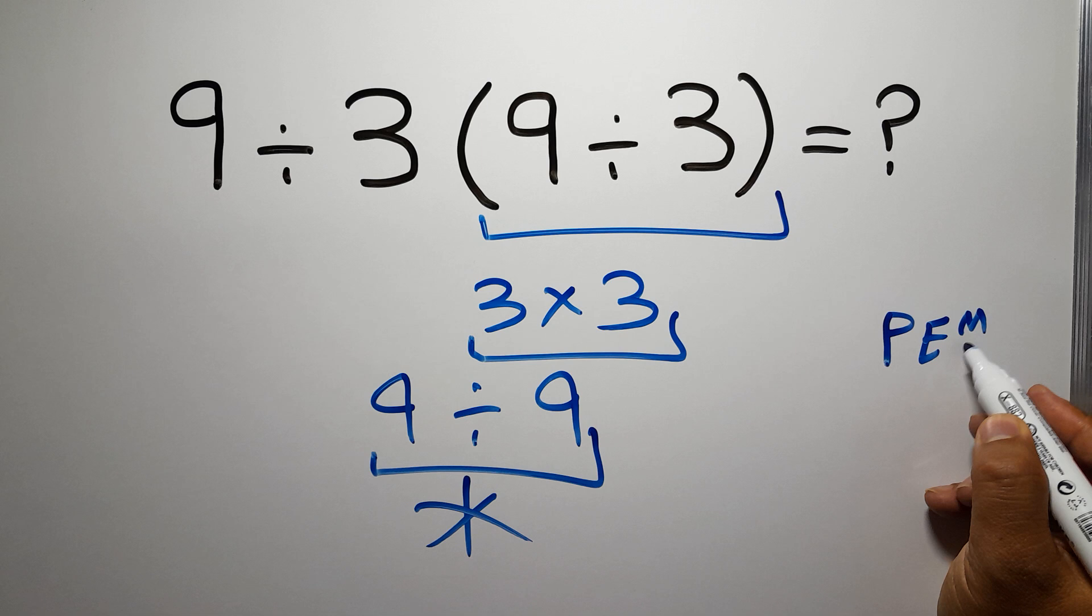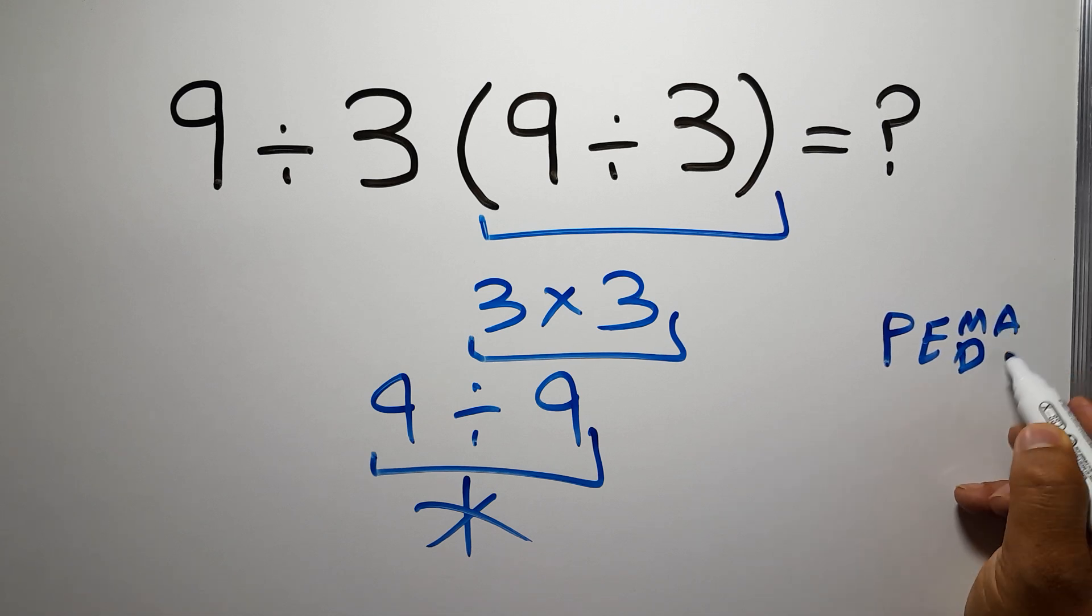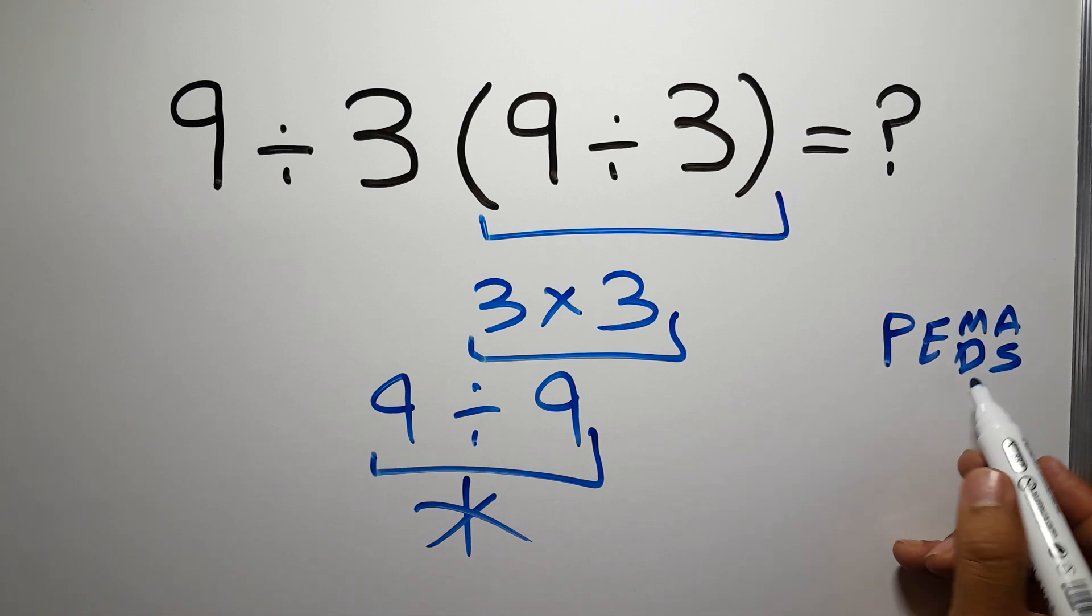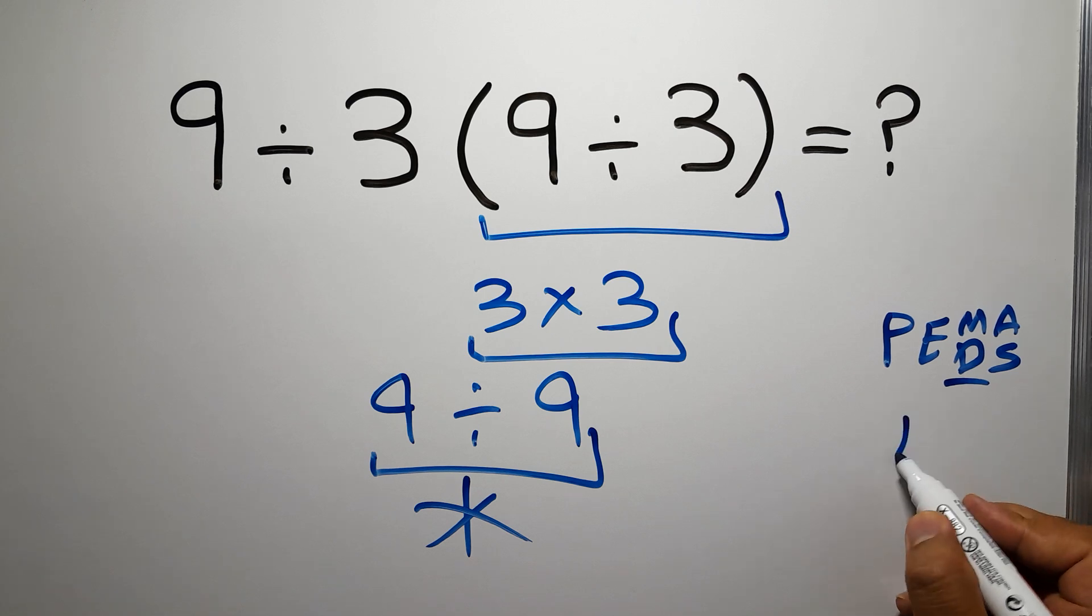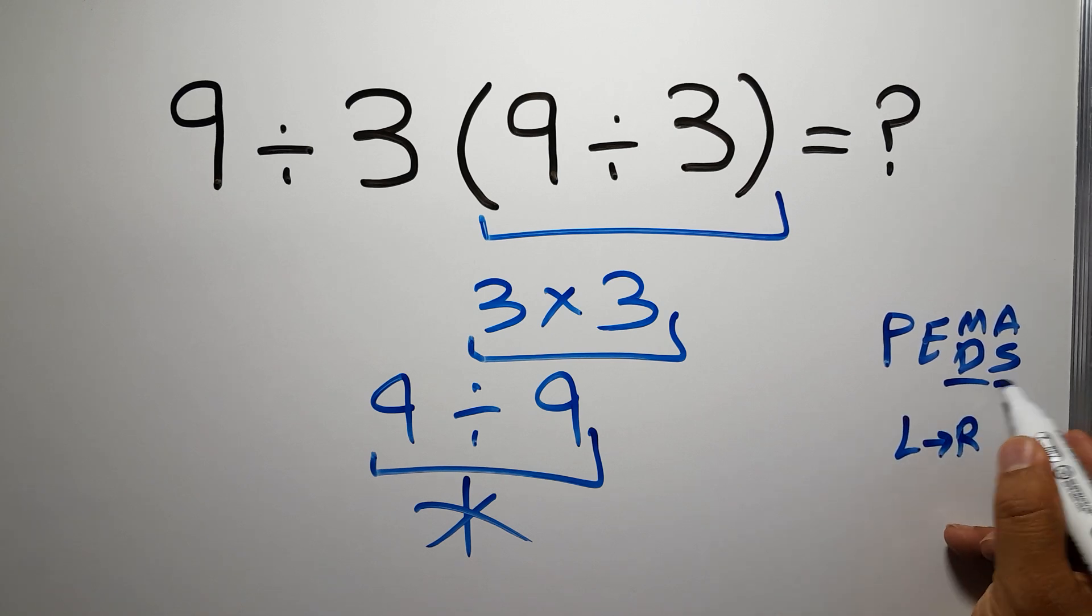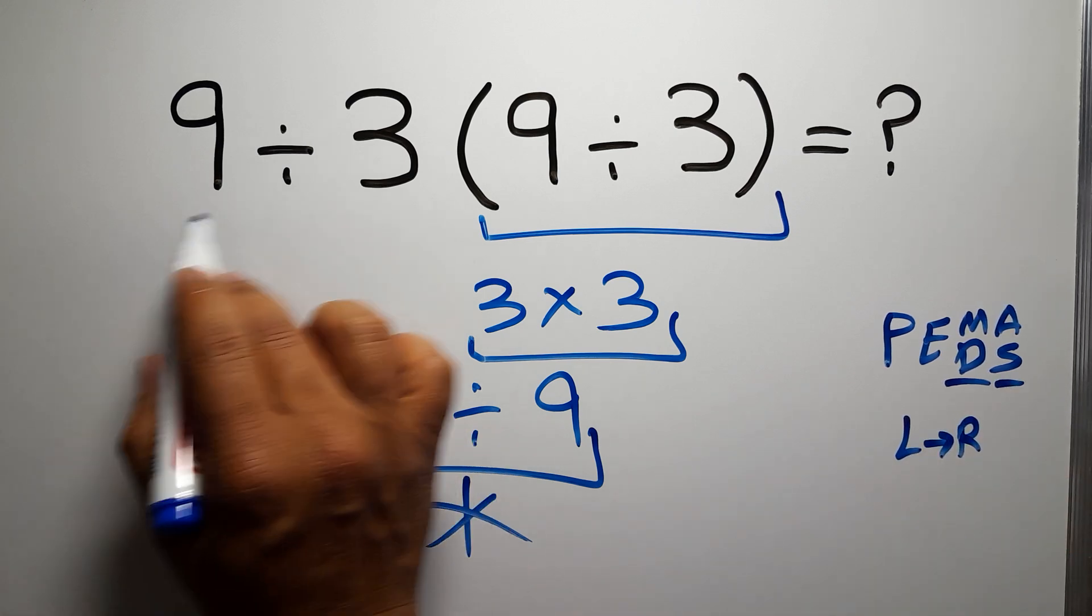Then exponents, then multiplication or division, and finally addition or subtraction. Remember that multiplication and division have equal priority and we have to work from left to right. The same applies to addition and subtraction.